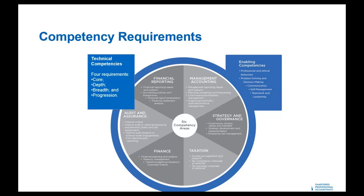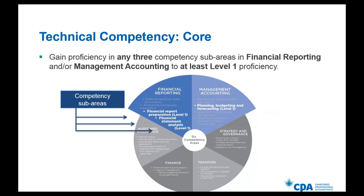These are areas we feel are important to be covered if you are a newly certified CPA. For the technical competency core requirement, you must meet at least three level one proficiencies in either financial reporting or management accounting. Each of these competency areas has four sub-competency areas, so you only need to meet three of these eight at a level one proficiency. These areas include: financial reporting needs and systems, accounting policies and transactions, financial report preparation, and financial statement analysis. For management accounting, it includes management reporting needs and systems, planning, budget and forecasting, cost, revenue or profitability management, and individual or organizational performance management.